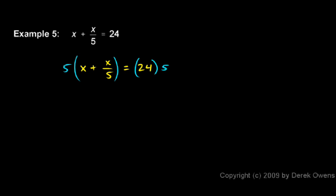5 times x on the left is simply 5x, and 5 times x over 5—those 5s cancel—leaving us with simply x. So 5x plus x because we have a plus sign right there, then on the right we have...